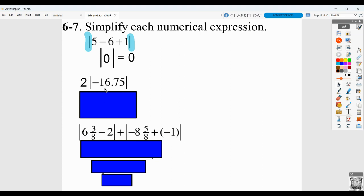Here the absolute value of negative 16.75 is positive 16.75. So we're multiplying two times that, because again, this is in front of it with another operation sign, so it means multiply, and then we get our answer.